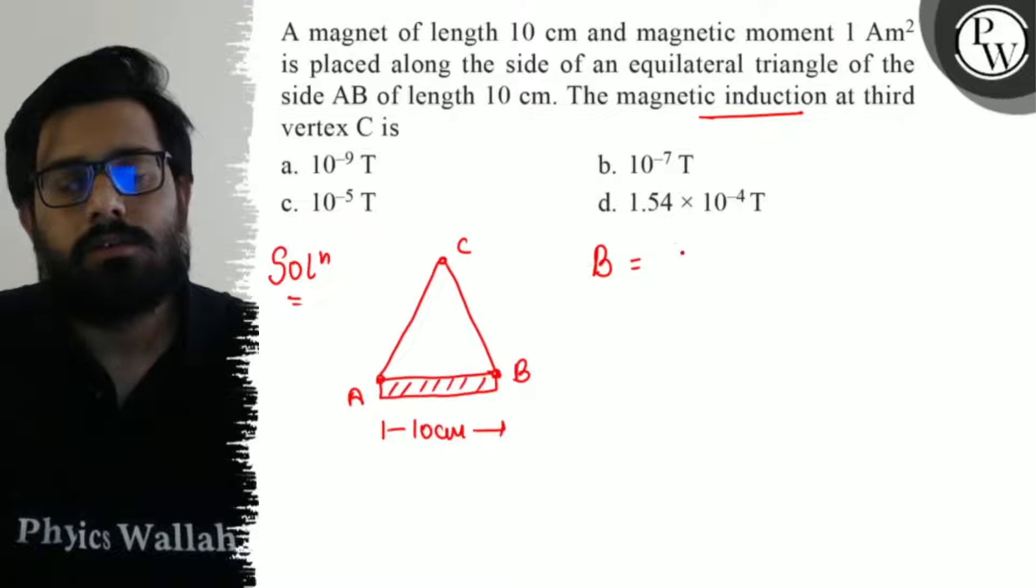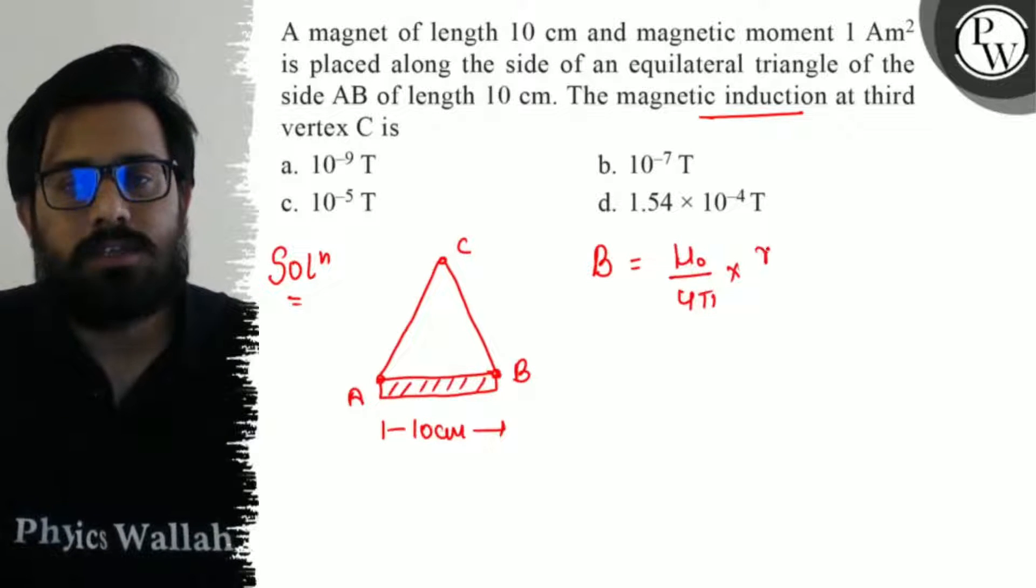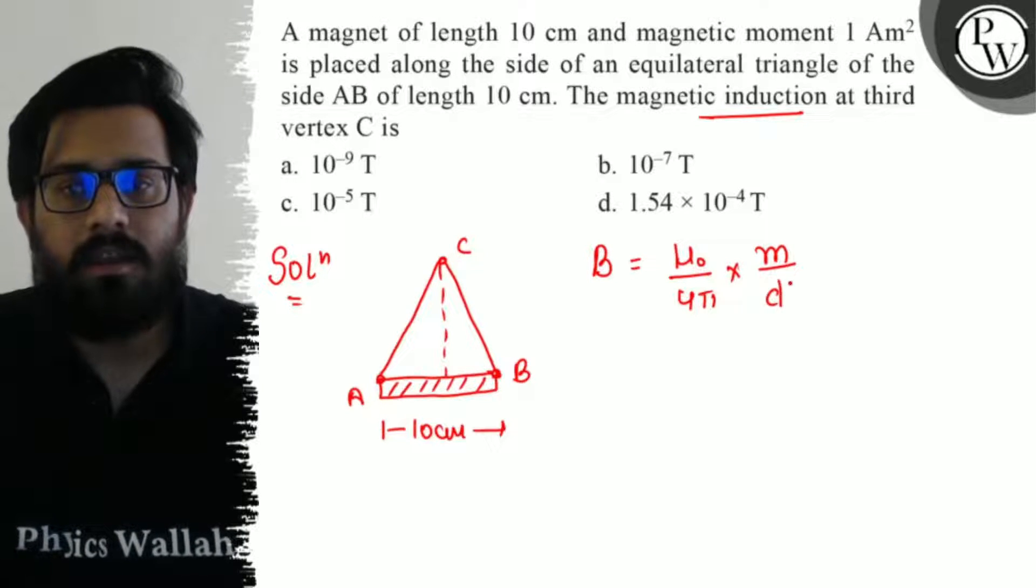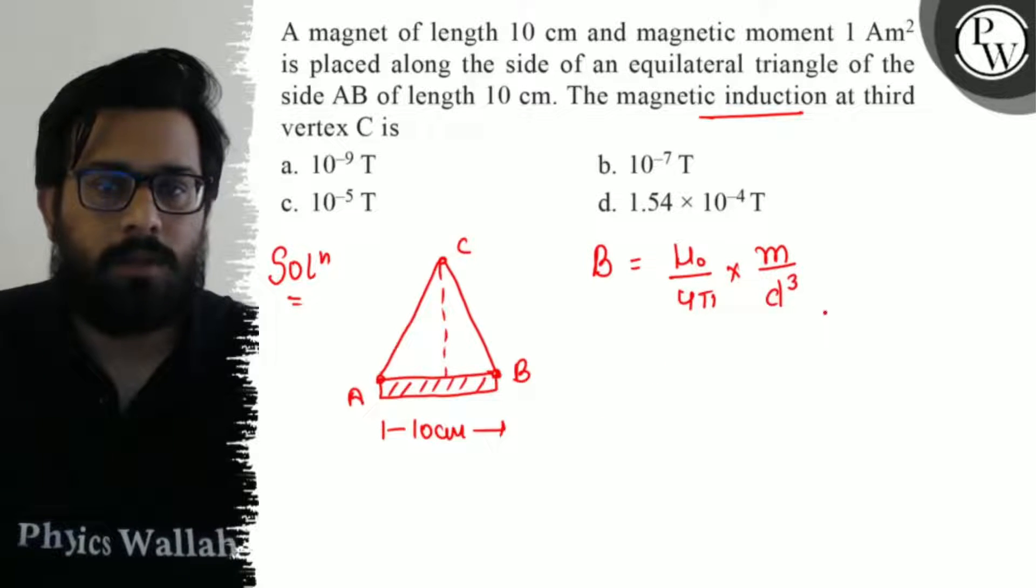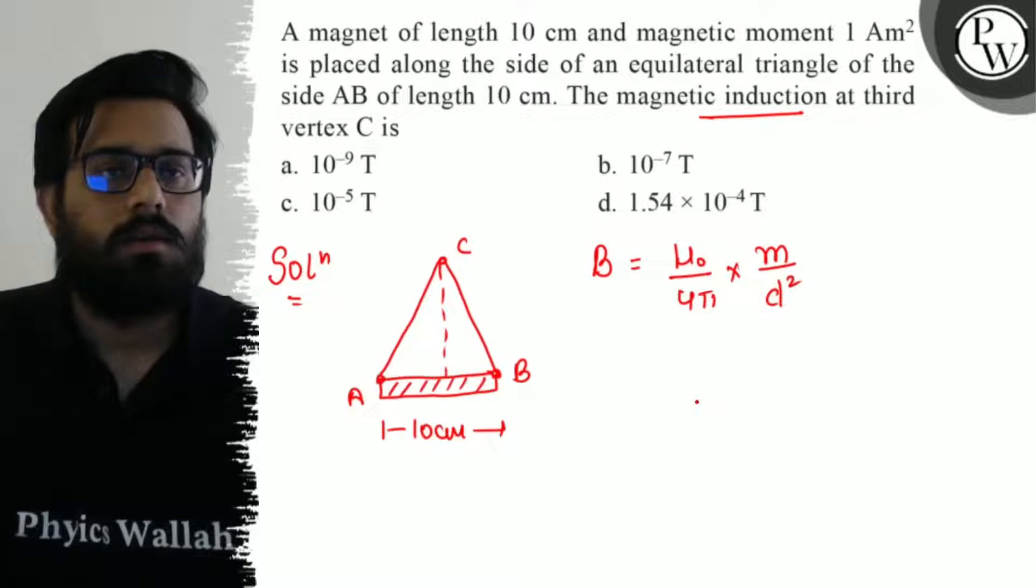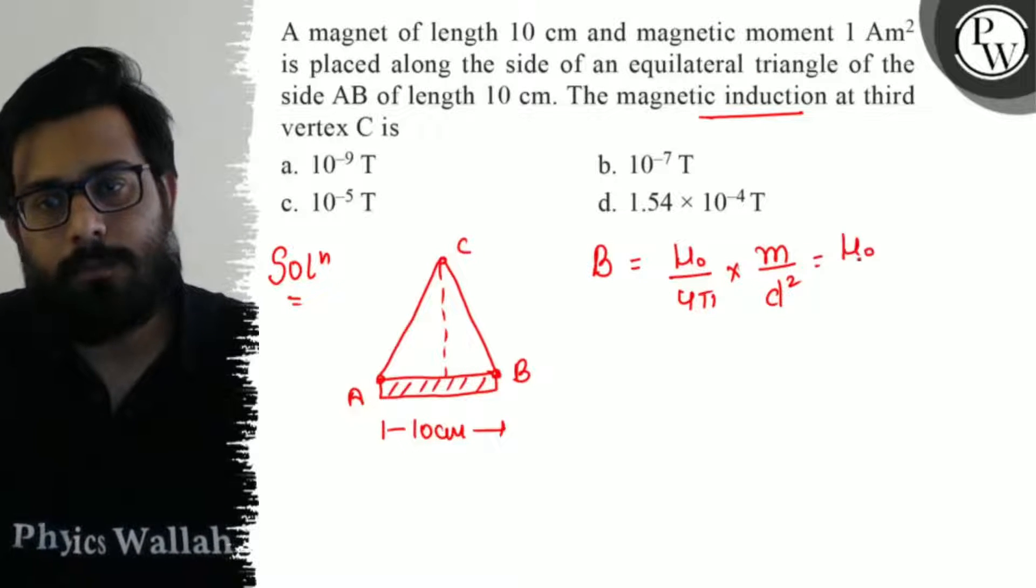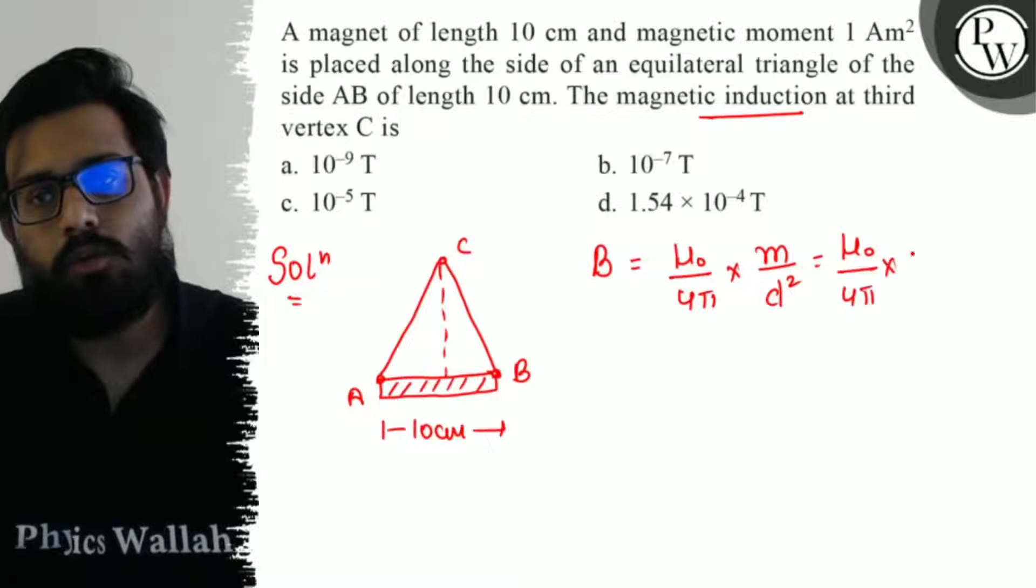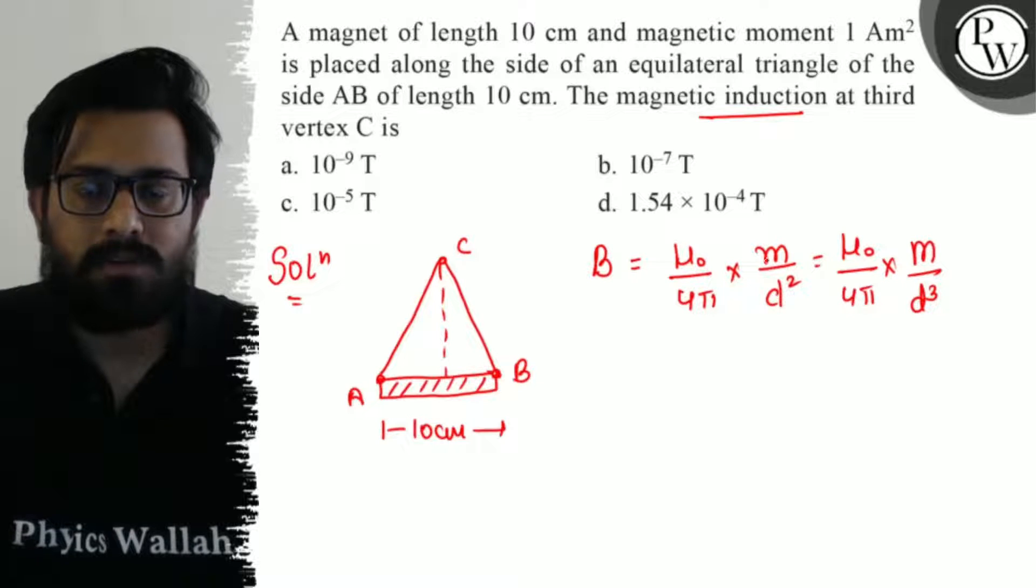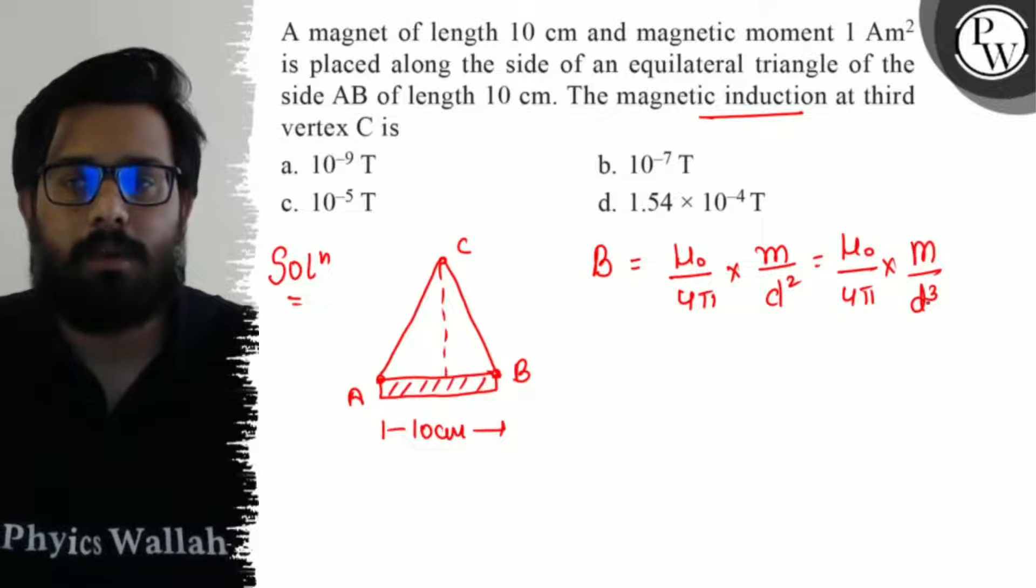So it comes to be mu naught upon 4 pi into the pole strength upon the separation of this vertex from the center of the magnet D cube. So it comes to be D square. Now magnetic moment is given. So let us consider this as mu naught upon 4 pi into M upon D cube. When you write in terms of the pole strength, it comes to be M upon D square. When you write in terms of the magnetic moment, it comes to be M upon D cube.